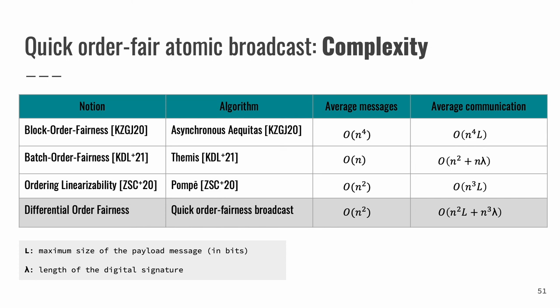The last thing that we want to discuss in this presentation is the complexity of our protocol. The table gives an overview of message complexities of algorithms with different notions for fair payload message ordering. We use two measures, message complexity and communication bit complexity. L is maximum size of the payload messages in bits and lambda is the length of the digital signature. We compare our quick order fair atomic broadcasts with the algorithms Aequitas, Themis-SP and Pompe. For example, Aequitas uses N to the 4th power messages for delivering one payload, which exceeds the cost of quick order fair broadcast at least by the factor of N squared. The similar improvement we see as well for the average communication costs. The more detailed complexity analysis can be found in the full version of the paper.